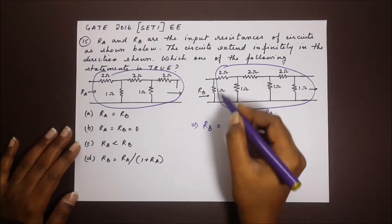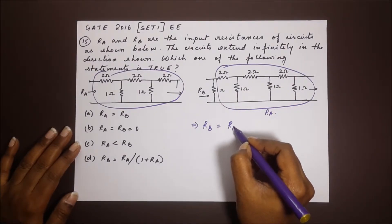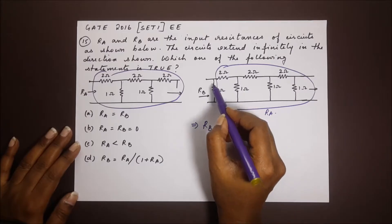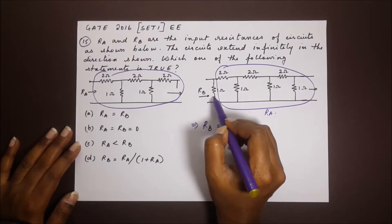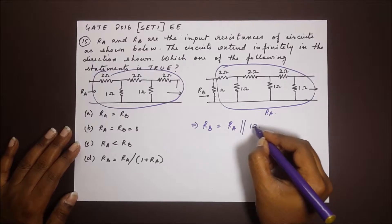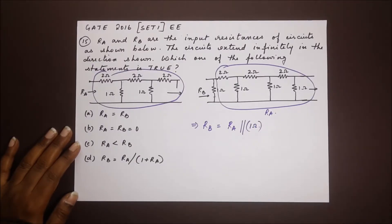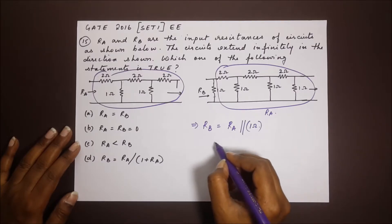This entire circuit is RA, right? So that's RA which is in parallel with the resistance one ohm, one ohm resistance. So they are in parallel. So that's the only thing that is added here.